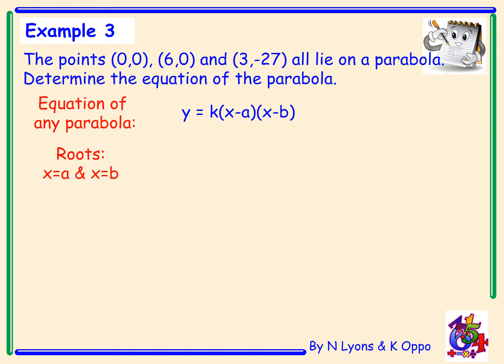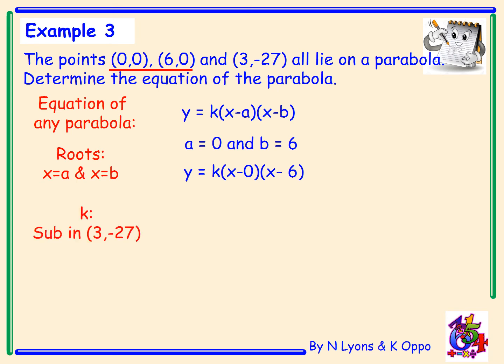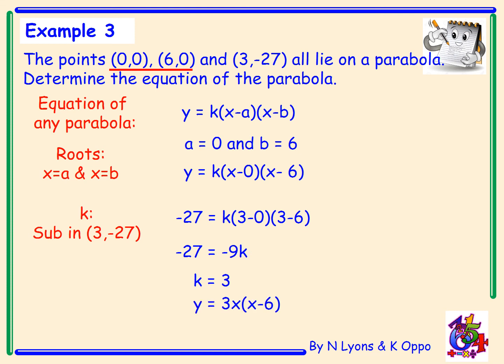The roots are x equals 0 and x equals 6, so a equals 0 and b equals 6. Substituting gives y equals k times x minus 0 times x minus 6. To find the constant k, I substitute x equals 3 and y equals minus 27: minus 27 equals k times (3 minus 0) times (3 minus 6). That gives minus 27 equals minus 9k. Rearranging, k equals 3. Substituting back: y equals 3x times x minus 6 — note that x minus 0 simplifies to x. Multiplying out gives y equals 3x squared minus 18x.